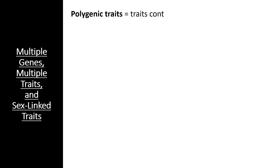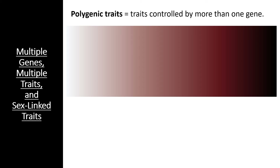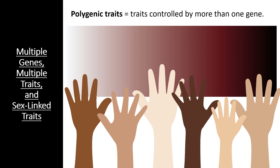Now we're going to go over a number of different types of inheritance that do not follow typical Mendelian ratios. First, let's consider polygenic traits — traits controlled by multiple genes. Polygenic traits are not inherited in typical Mendelian ratios simply because there are so many different genes at play. A good example of a polygenic trait is human skin color, which is controlled by several genes and exists on a sliding scale between two extremes, similar to height, weight, and eye color.